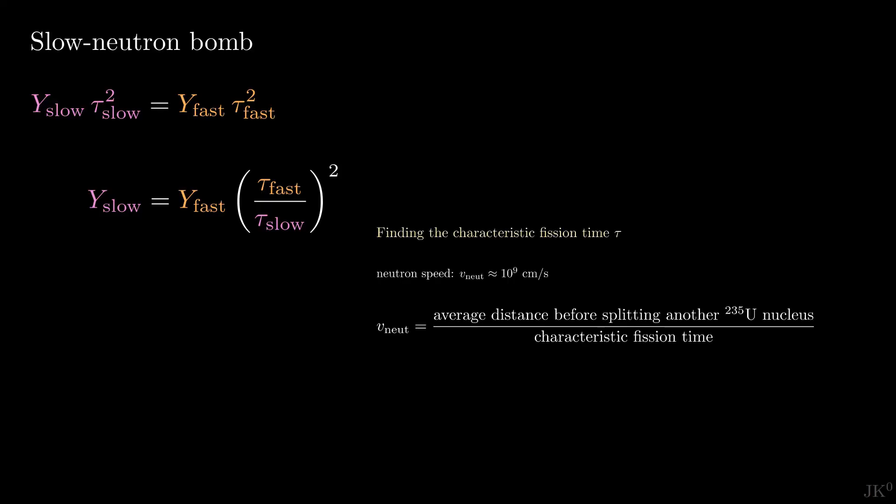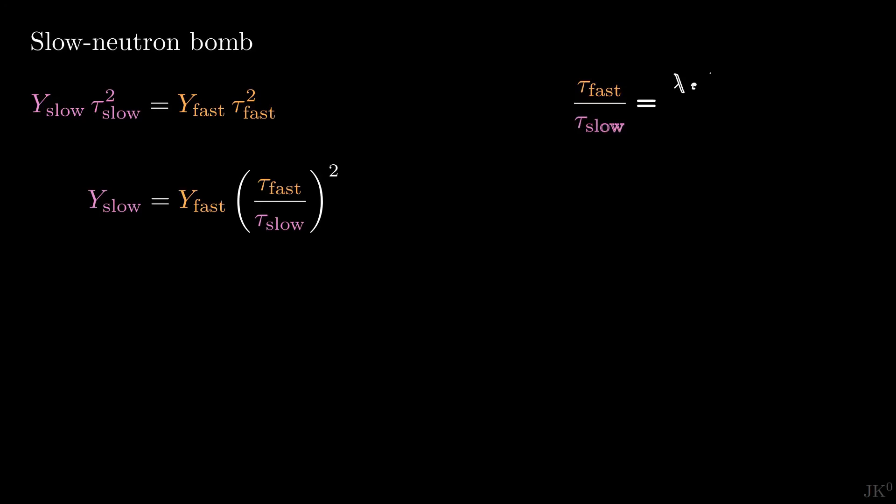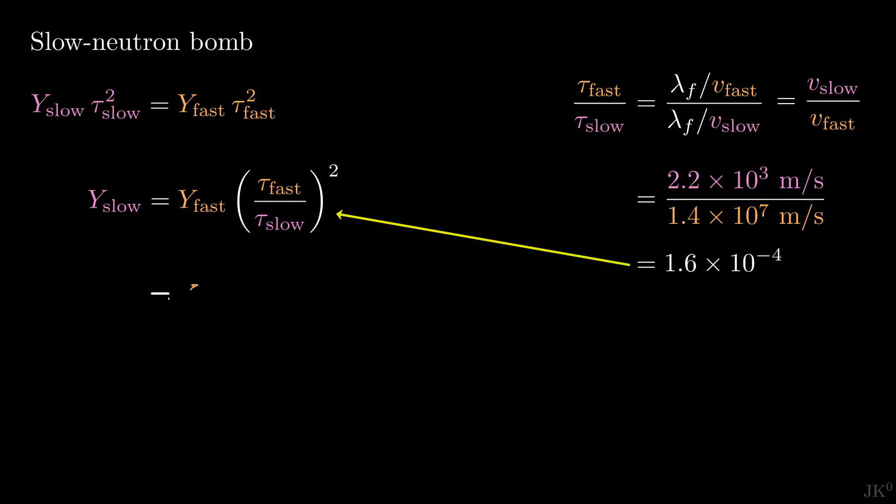In the video about the physics of a nuclear explosion, we found that this characteristic time is given by the fission mean free path divided by the speed of the neutron. So the ratio that we are trying to find becomes just the ratio between the speed of slow neutrons and fast neutrons. The speed of slow and fast neutrons can be calculated from their energy, and plugging their values we find that the ratio that we are looking for is of the order of 10 to the minus 4.